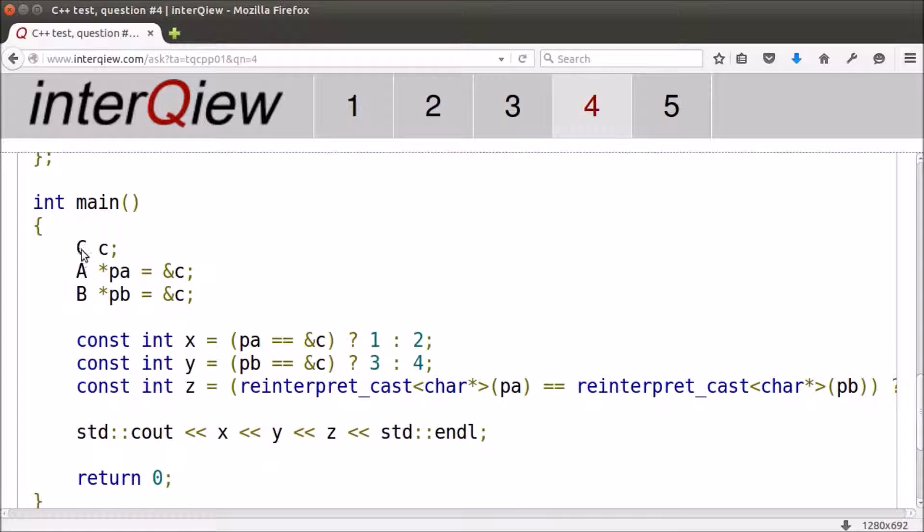In the main function, object C of Class C is defined. The address of that object is the pointer of Class C. That pointer is assigned to a pointer of Class A and to a pointer of Class B. In these two assignments, compiler automatically converts the derived class pointer to corresponding base class pointer.